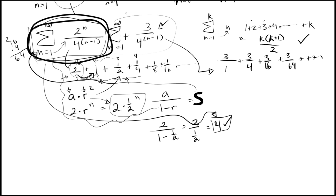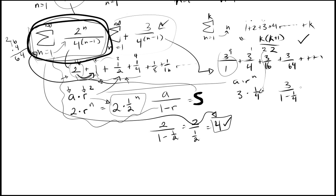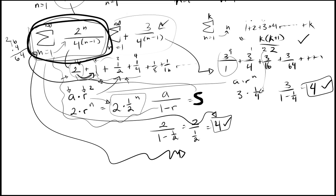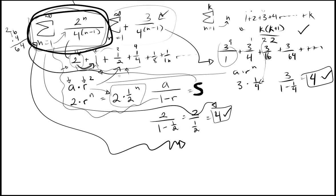Now we apply the same rules to the second part. We have a times r to the n; the first term is 3, so a is 3. The denominators go 1, 4, 16, 64 — so r is 1/4. That gives us 3 over 1 minus 1/4, which equals 4. So the first sum was 4 and the second sum was also 4, which I find a bit strange.